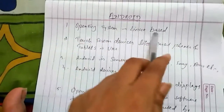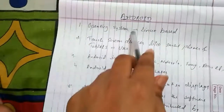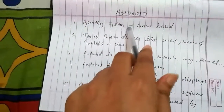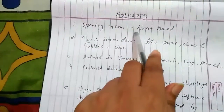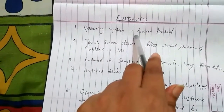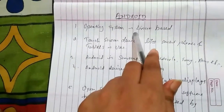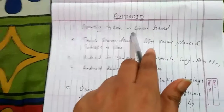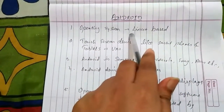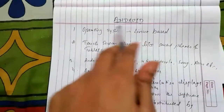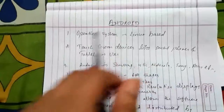Most phones nowadays are working and functioning through the Android operating system. Just as computers and laptops mostly have Unix, Linux, or Microsoft operating systems, in the same way mobile phones use the Android operating system.